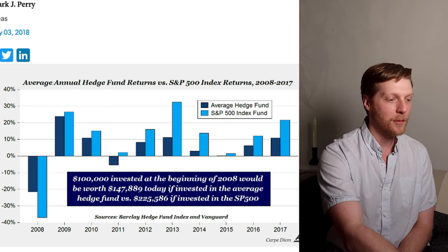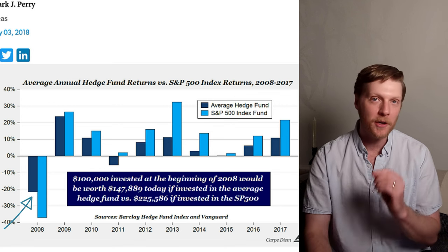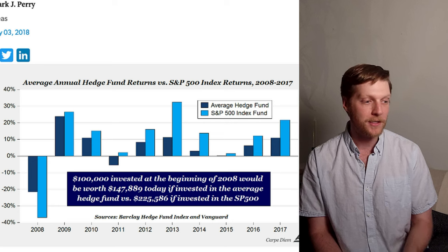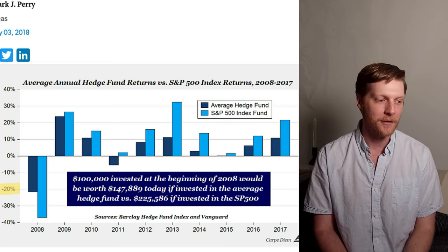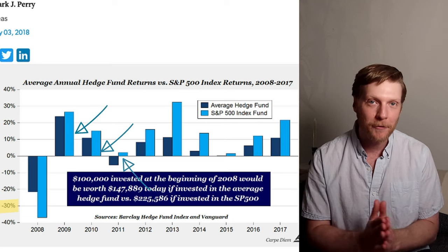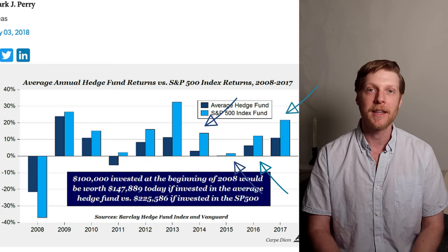If we look at the performance, you can see only in year one did the hedge fund outperform the S&P 500. They lost 22% instead of the S&P 500 losing 37%. But then every year after that, all nine years, the S&P 500 won. It's so hard to beat, even for the professionals, because it lets its winners ride and it cuts its losers. There's two components there.